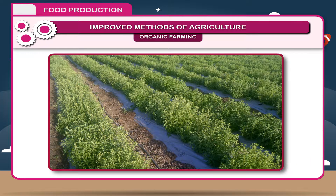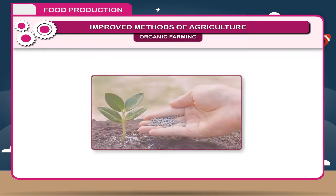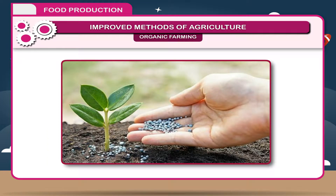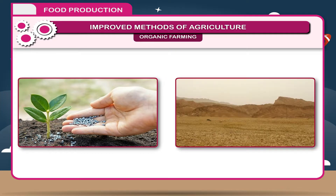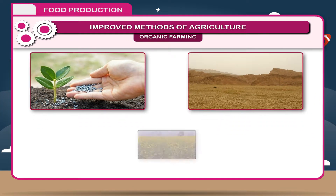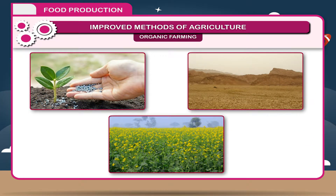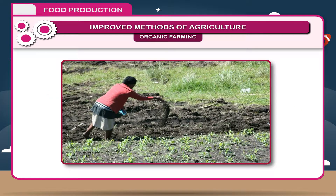It increases the nutrients and water-holding capacity of the soil. It reduces the harmful chemicals present in the soil and converts barren land into fertile land. The organic manure does not harm the soil or the crop even in excess quantity.